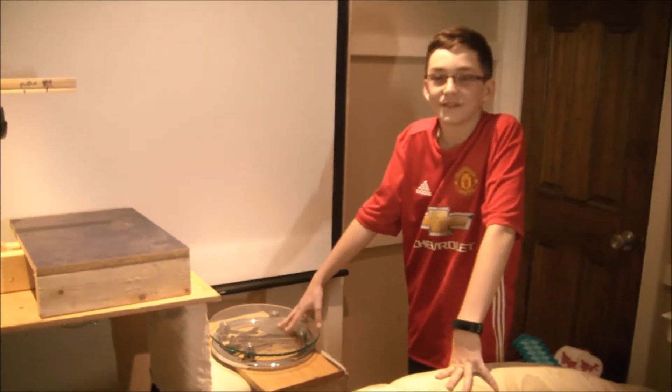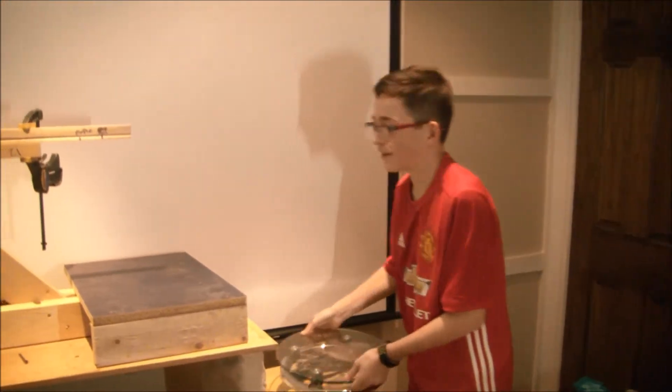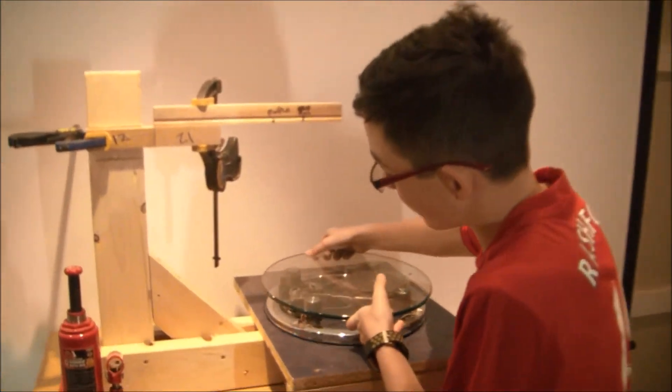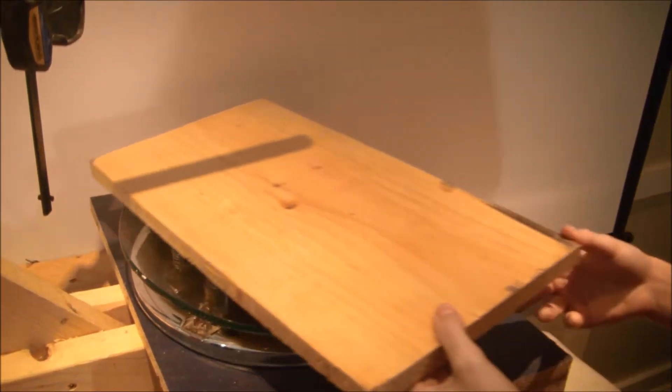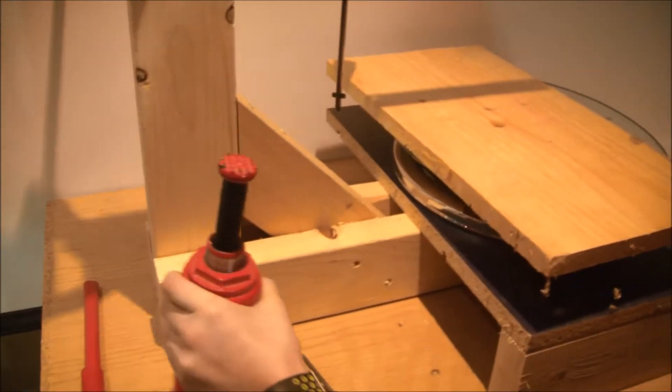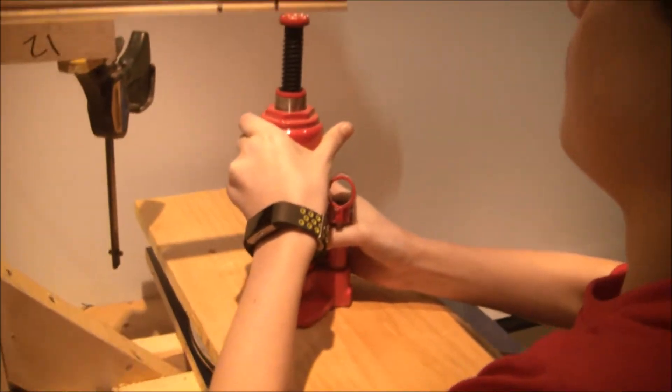So how did you perform the experiments? This is how we perform the experiments. Put a scale here, a piece of wood to protect the glass from the bottle jack, and line it up with the wood.